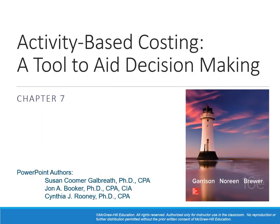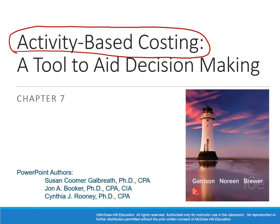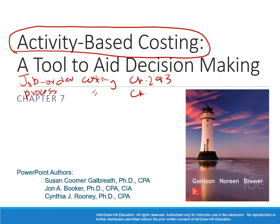Hello everyone. In this chapter I'm going to cover chapter 7, in which we introduce and discuss a new costing approach called activity-based costing. Let me remind you about prior costing approaches: the job order costing which we covered in chapters 2 and 3, then process costing introduced in chapter 4, and then variable costing which is chapter 6.